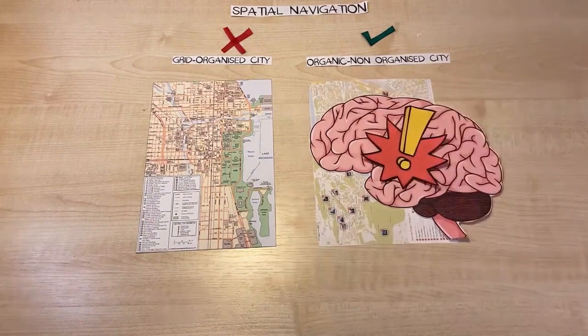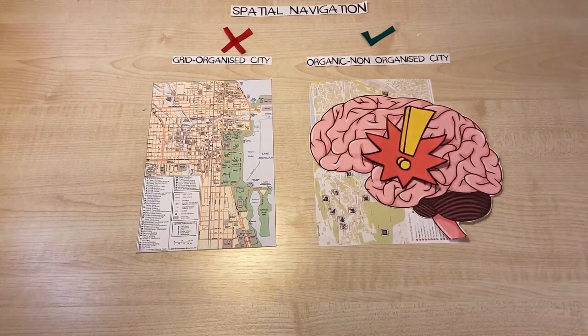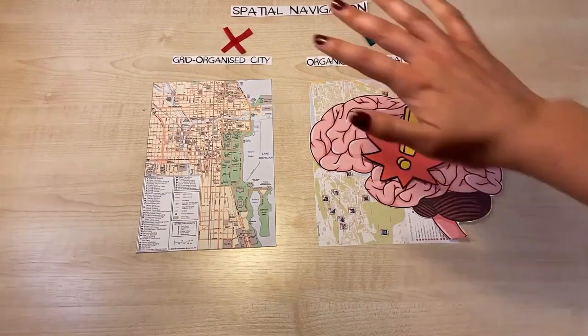The researchers found that people from the countryside and less organized cities had better spatial navigation than those from organized cities.